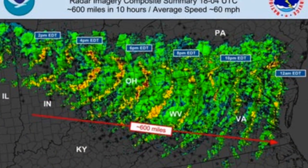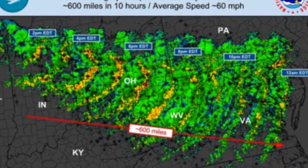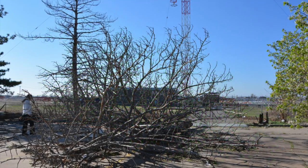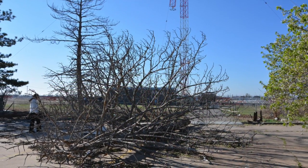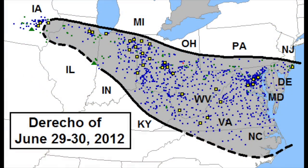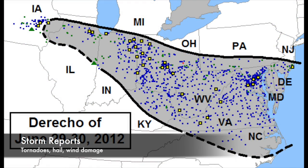One important question associated with derechos is: are they dangerous? The answer is yes, but they are mainly only a danger to those outside due to high winds causing objects to topple over. However, strong derechos can lead to large hail and even some tornadoes.